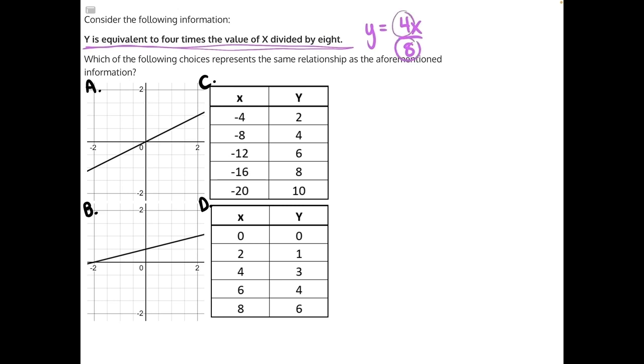4 divided by 8 doesn't give us a whole number, so we're going to end up with a fraction. Let's take out the greatest common factor from both the numerator and denominator, and that would be 4. 4 divided by 4 will give us 1 over 8 divided by 4 will give us 2. So our equation is y equals 1 half x.